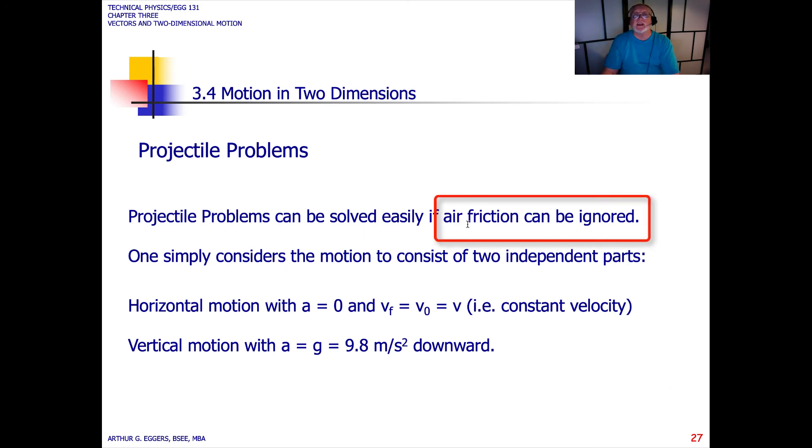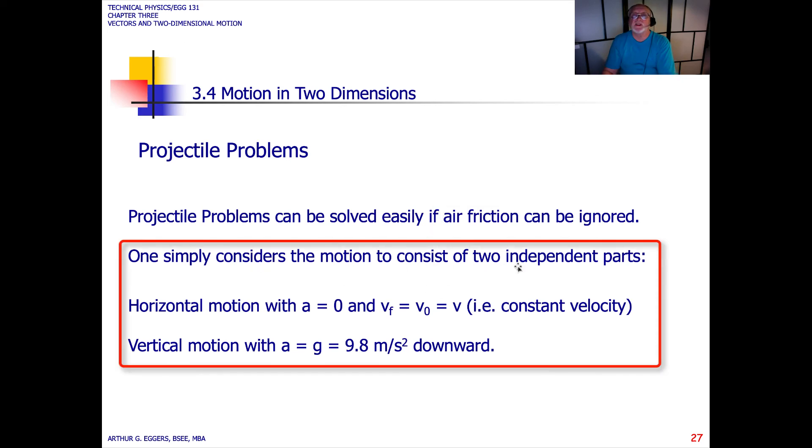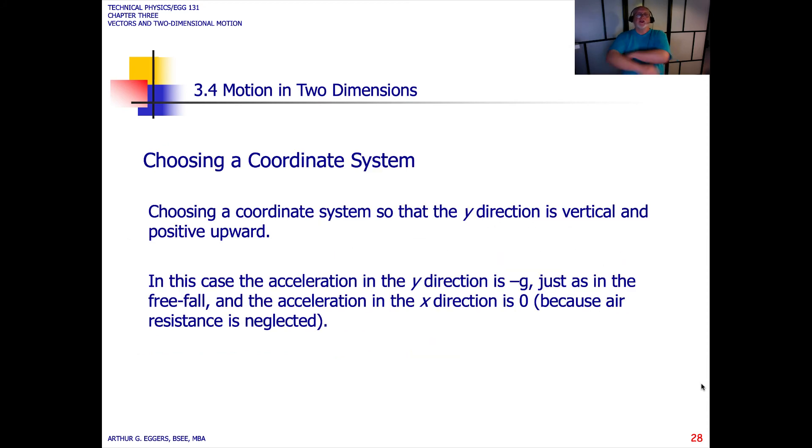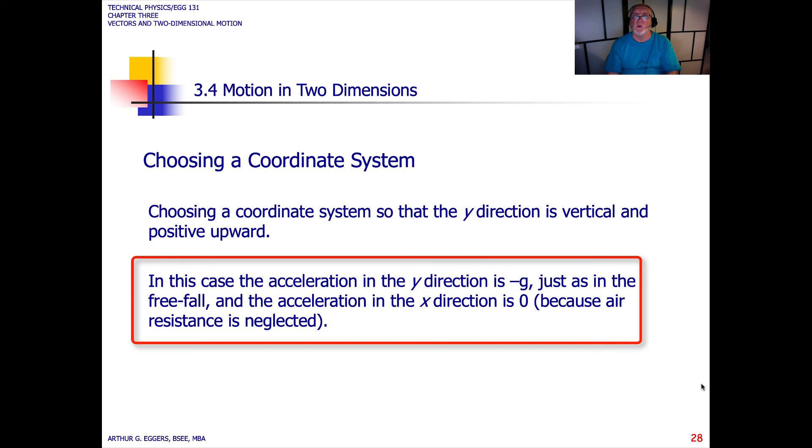In projectile problems, they can be solved easily if air friction is ignored. One simply considers the motion to consist of two independent parts, x and y. The horizontal motion with an initial acceleration of zero and a final velocity equal to the initial velocity, we call it v for a constant velocity problem. And our vertical motion with the acceleration equal to the acceleration of gravity, equal to 9.8 meters per second squared downward. In choosing and working these types of problems, you want to choose a coordinate system so that the y direction is vertical and positive upward. In this case, the acceleration in the y direction as an object is moving up is negative, so negative g. Just as in free fall, the acceleration in the x direction is zero because air resistance is considered negligible.